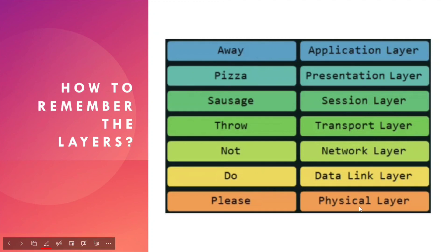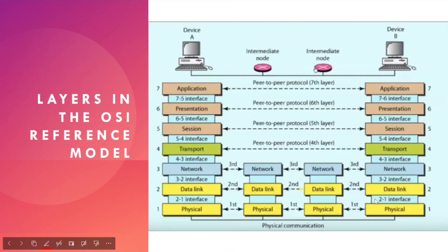The order of the layers is very important. You need to maintain the correct order — from Physical at the bottom to Application at the top. When the OSI layer operates from sender to receiver, the data passes through the layers in order. So the order from bottom: Physical, Data Link, Network, Transport, Session, Presentation, Application — and you must maintain this order.